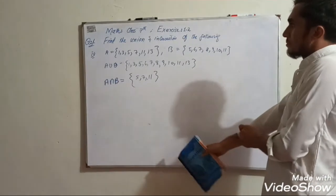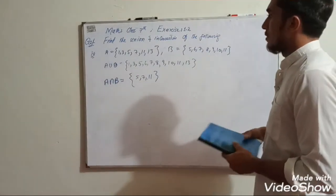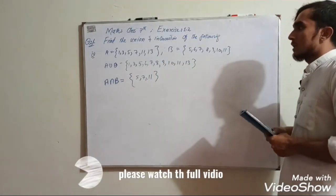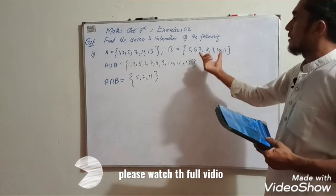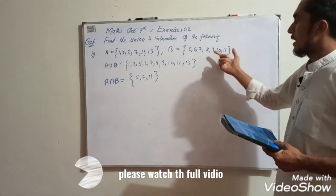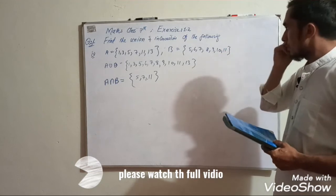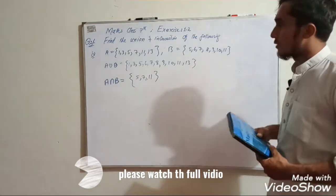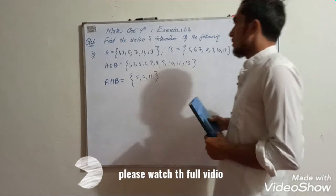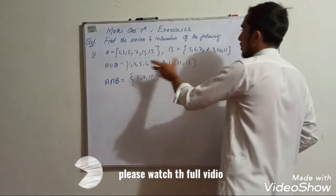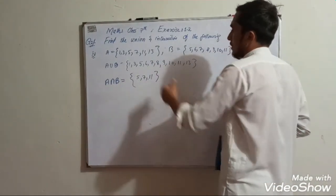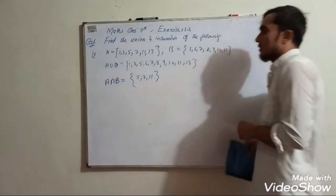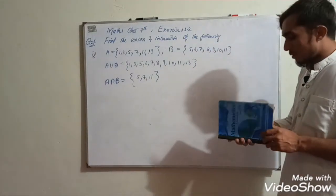For Exercise 1.2, question 1, part 4: A = {1, 3, 5, 7, 11, 13, ...} and B = {5, 6, 7, 8, 9, 10, 11, ...}. A union B contains all elements from either set: {1, 3, 5, 6, 7, 8, 9, 10, 11, 13, ...}. Now we find A intersection B — the common elements.